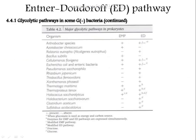In gram-negative bacteria, microorganisms can use either the EMP pathway or the ED pathway. A plus sign denotes the pathway is present and a minus sign denotes absent. When gluconate is used as an energy and carbon source, organisms such as Arthrobacter species, Escherichia and enteric bacteria can use the ED pathway. Pseudomonas, Rhizobium, Xanthomonas, Thiobacillus, Thermotoga, Thermoproteus, Halococcus, and Halobacterium are microorganisms that can use the ED pathway.